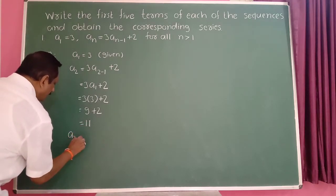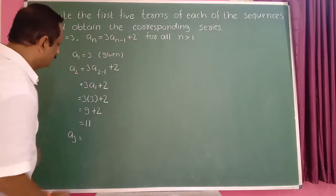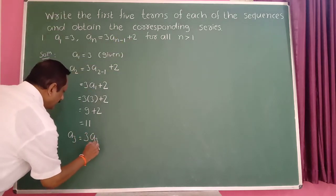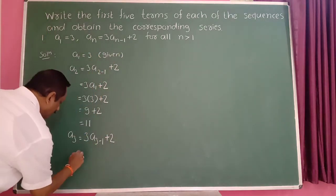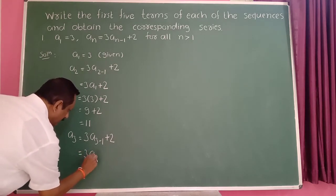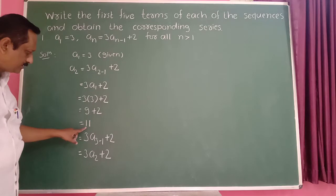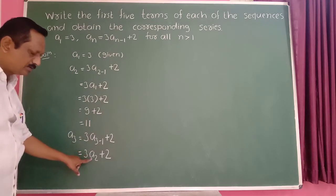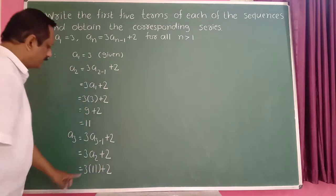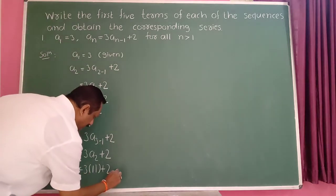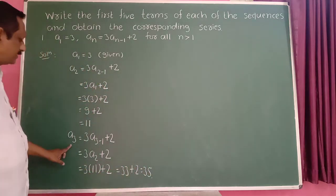Next find a_3. Put n equal to 3. So 3 into a_(3-1) plus 2. This equals 3 into a_2 plus 2. But a_2 is equal to 11. So this is equal to 3 into 11 plus 2. 11 into 3 becomes 33, plus 2 equals 35. So the third term is 35.